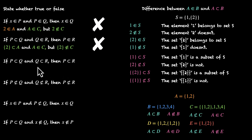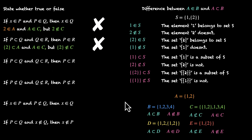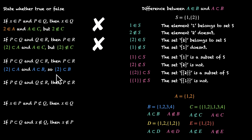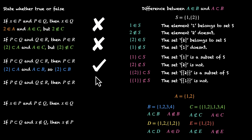Statement 3: if P is a subset of Q and Q is a subset of R, then P is a subset of R. If you can make P from Q and you can make Q from R, then you can definitely make P from R. This seems logical, and it is. For example, if the set containing 2 is a subset of A and A is a subset of B, then you can make the set containing 2 from the elements of B as well. So this is true.